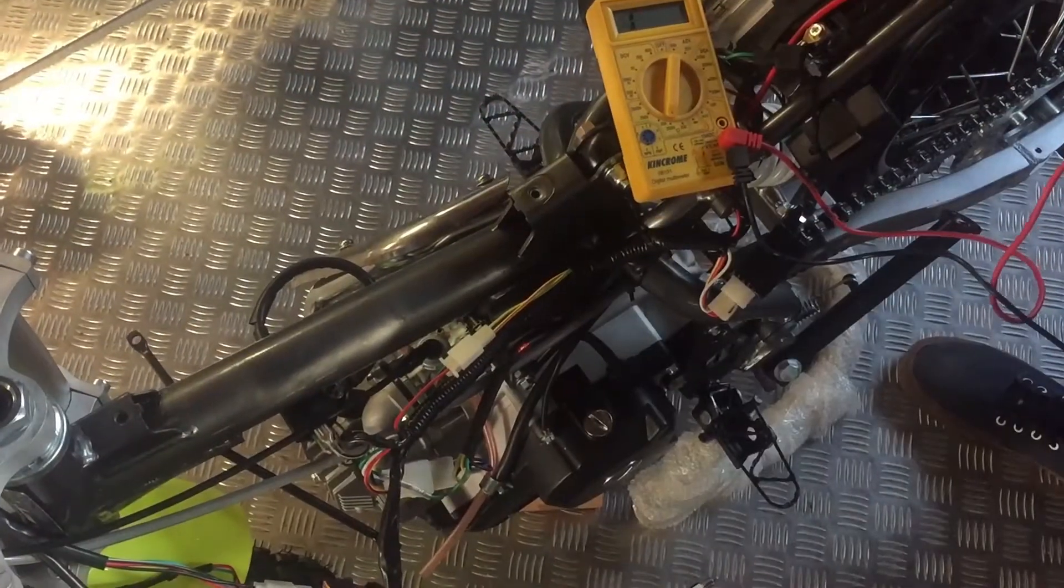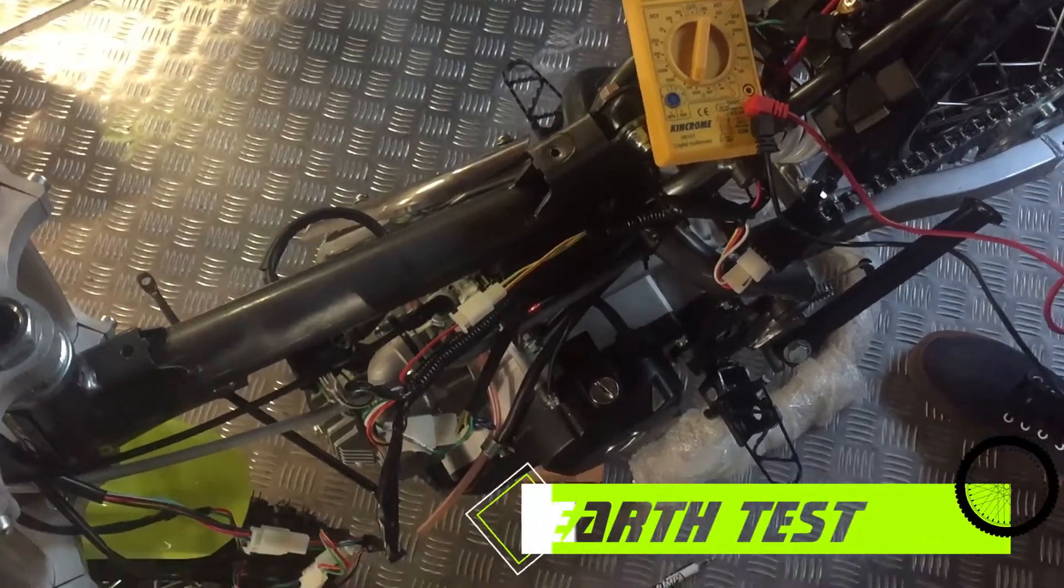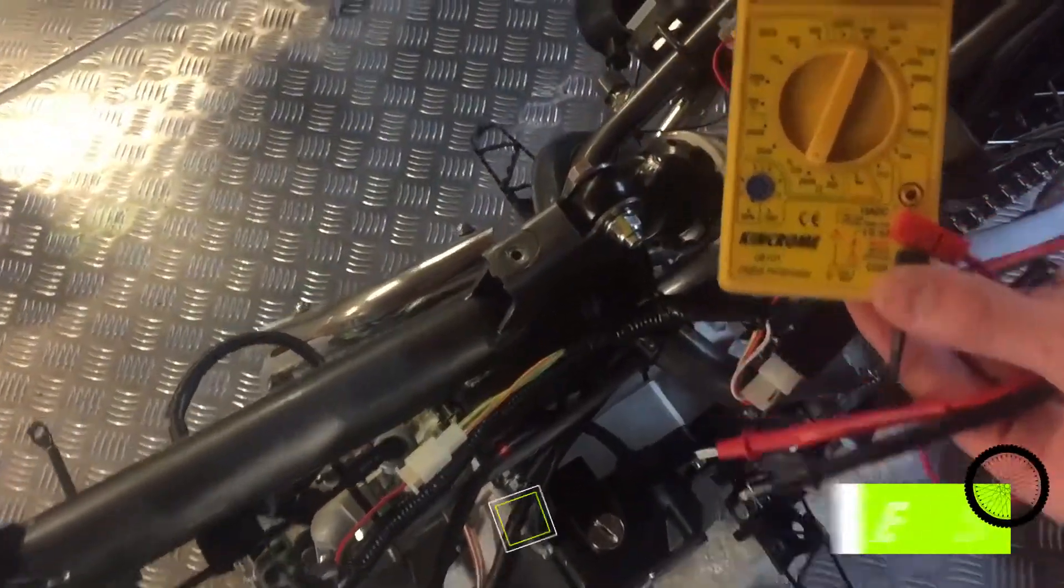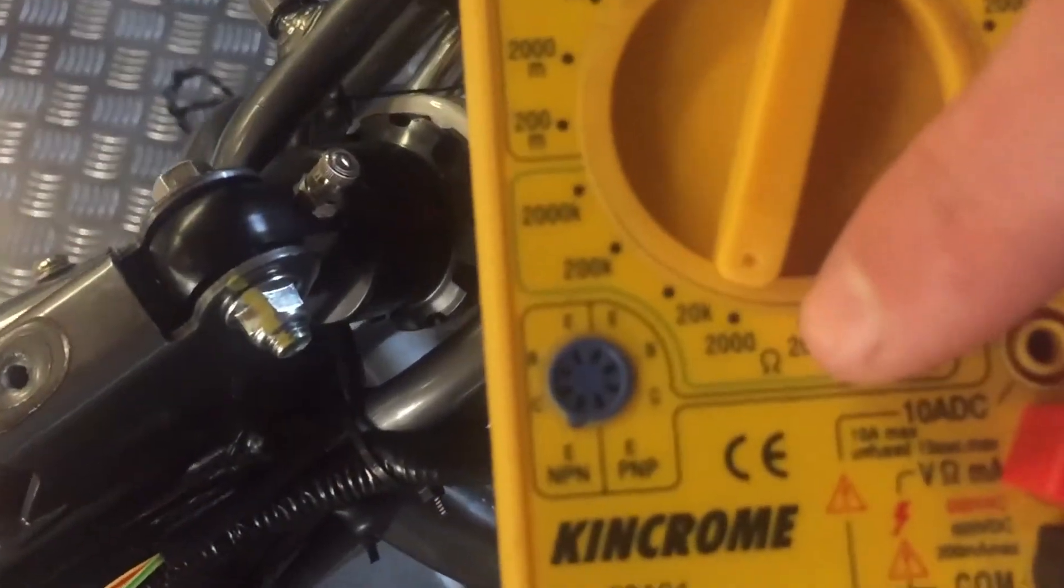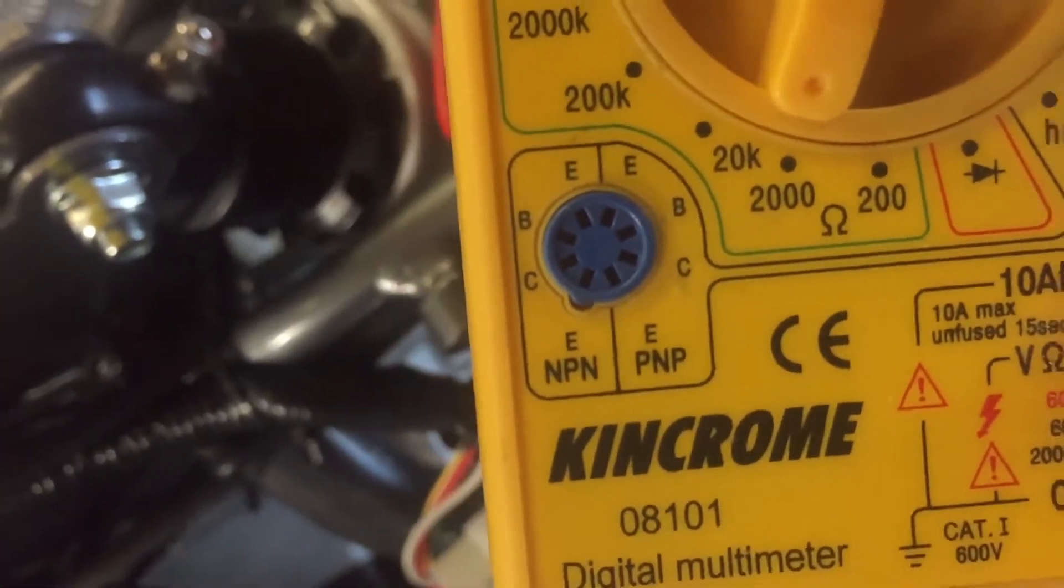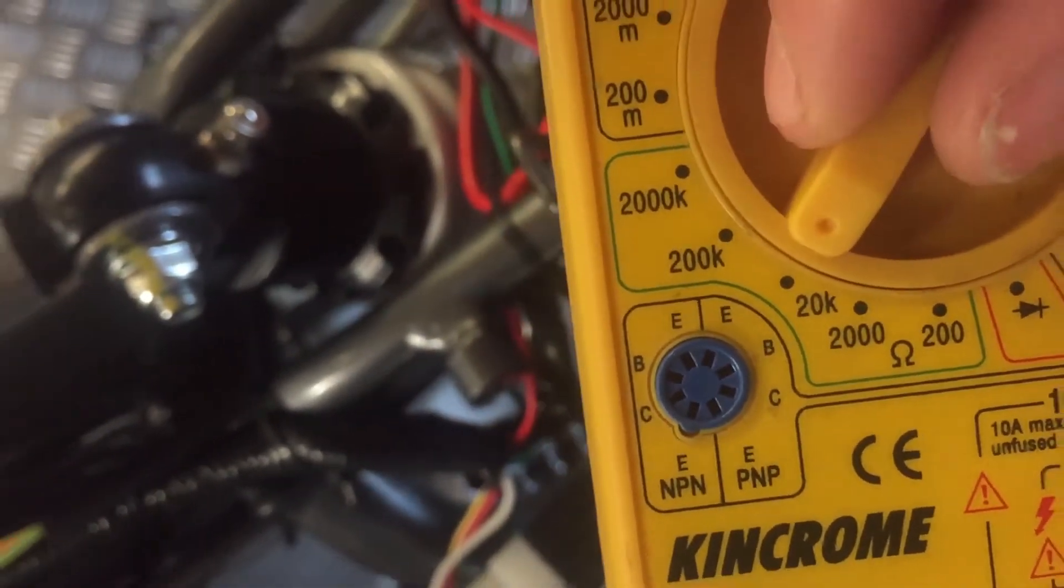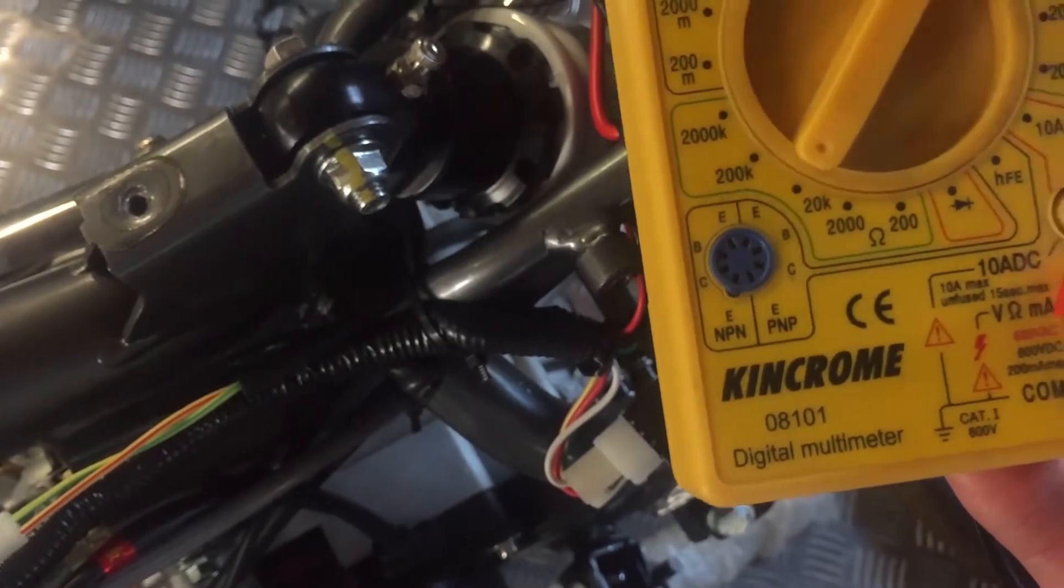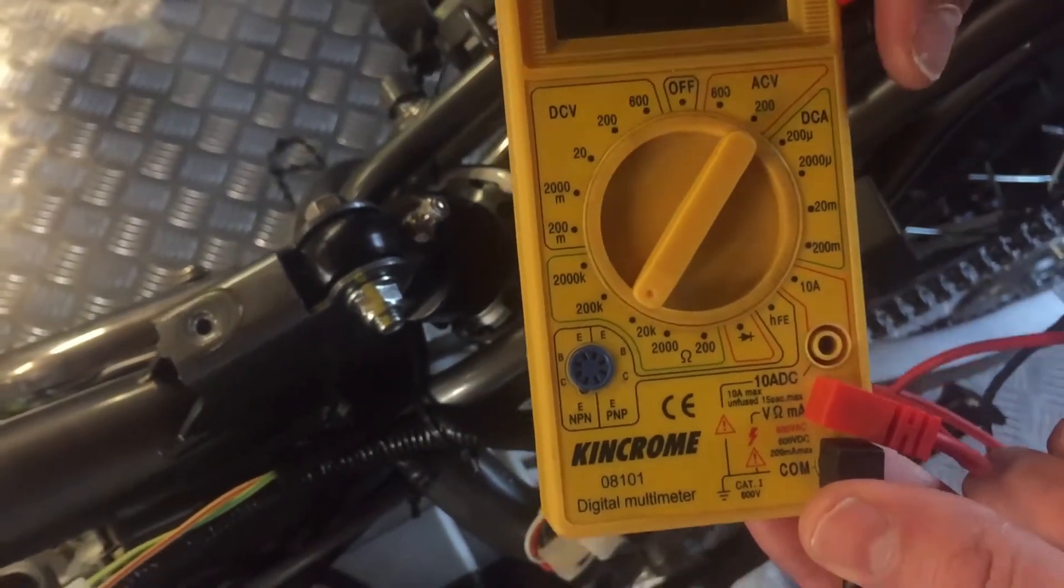This next test, we're going to check our earth. We're going to set our meter to ohms, which if you look here is almost a shape of an O, and we're going to set it to 20k, just one of the lowest ones on your meter.